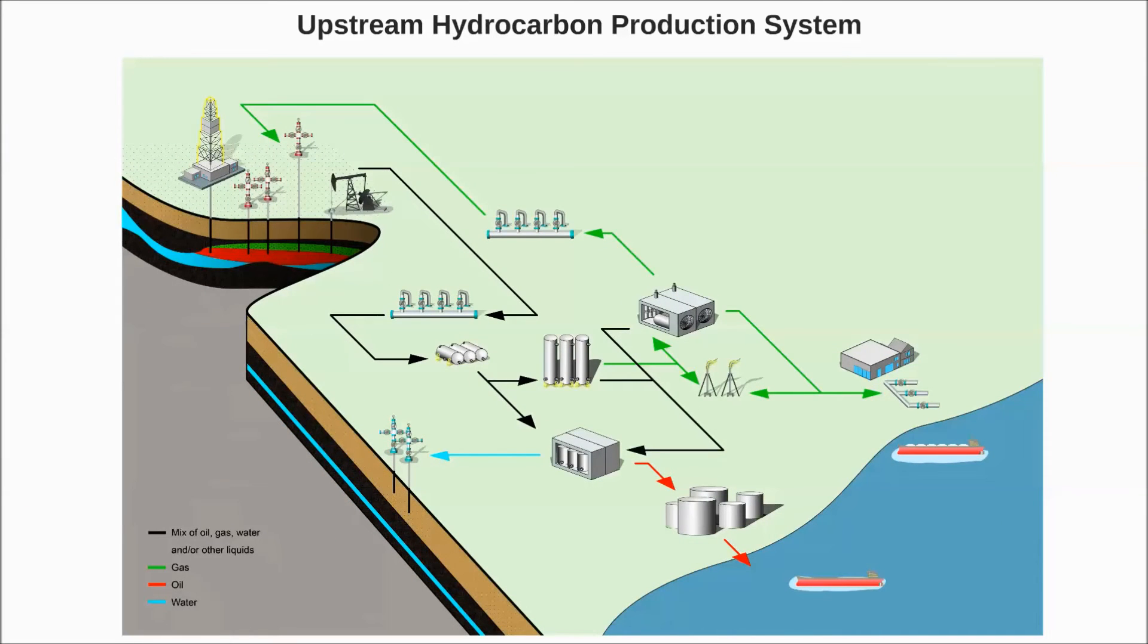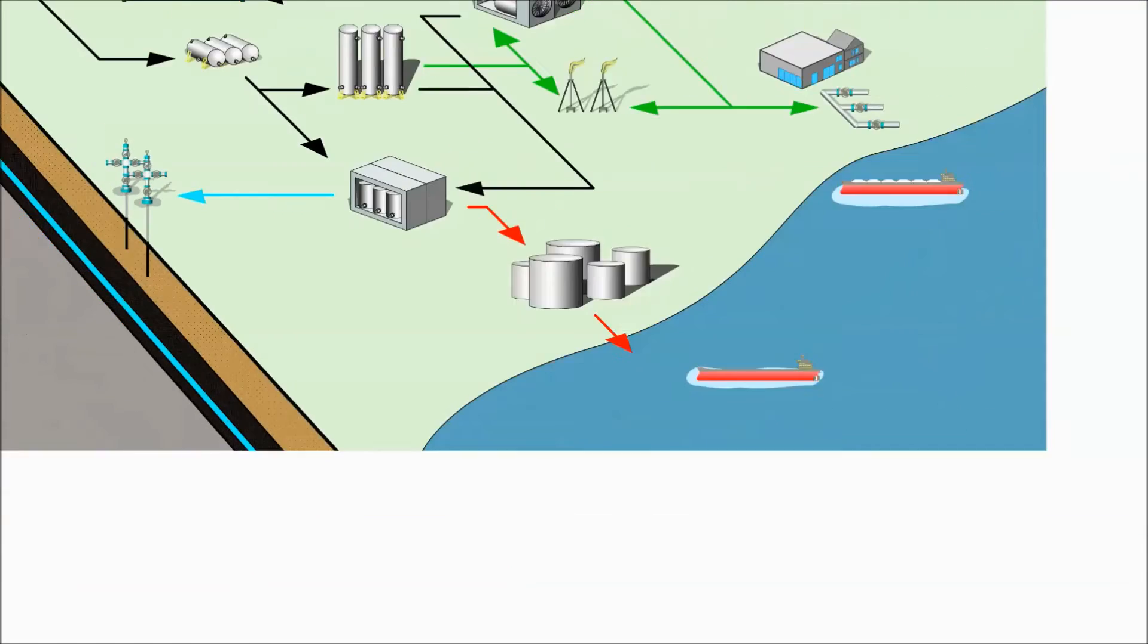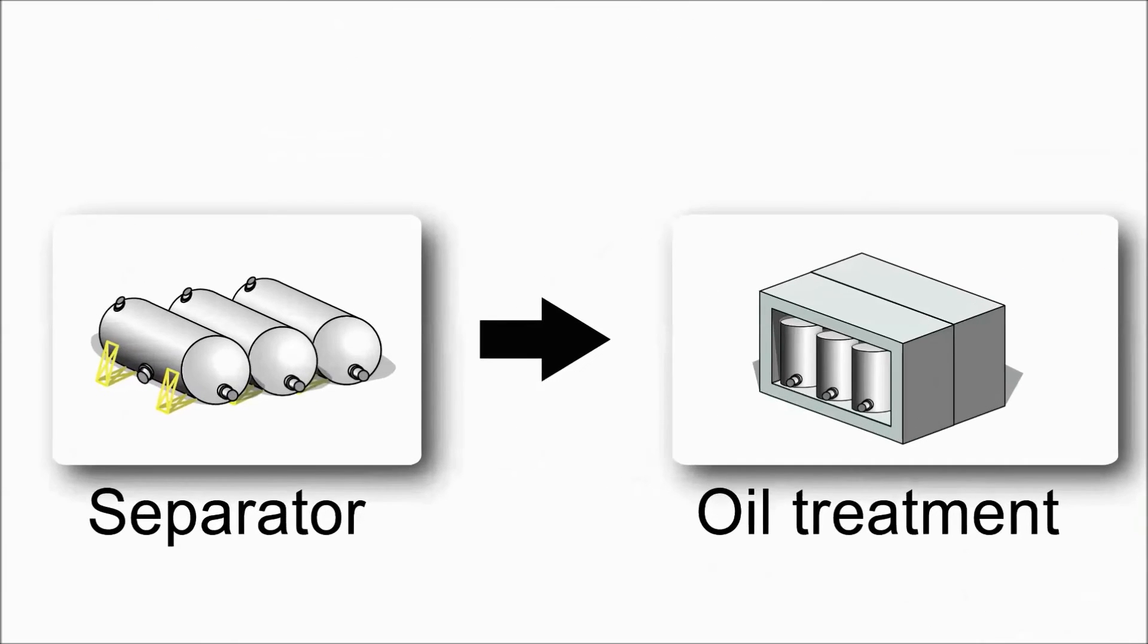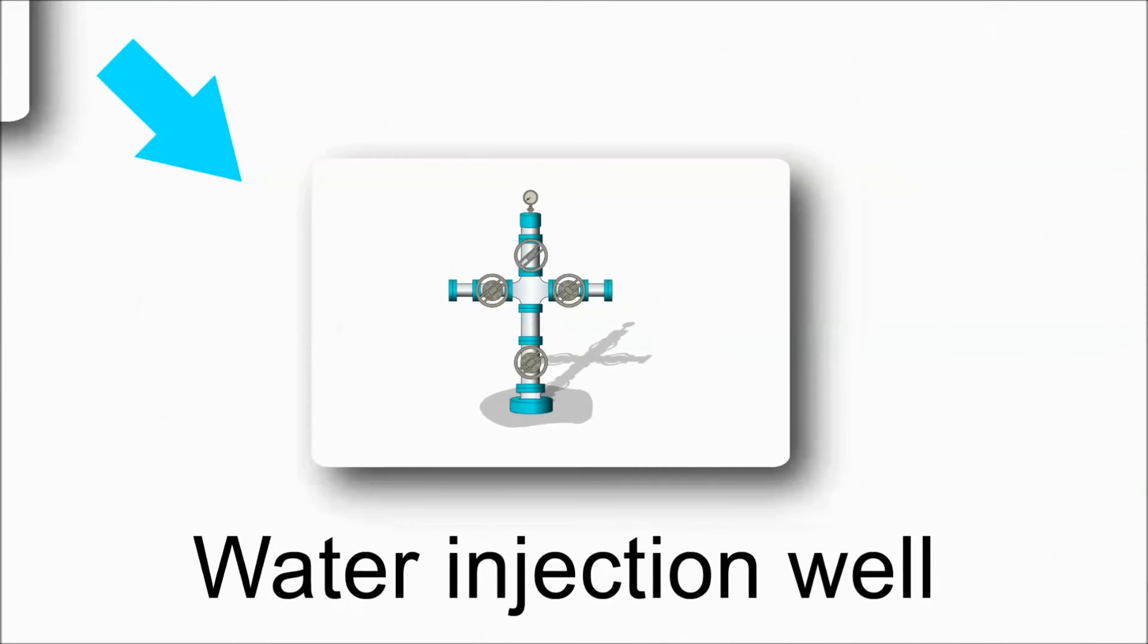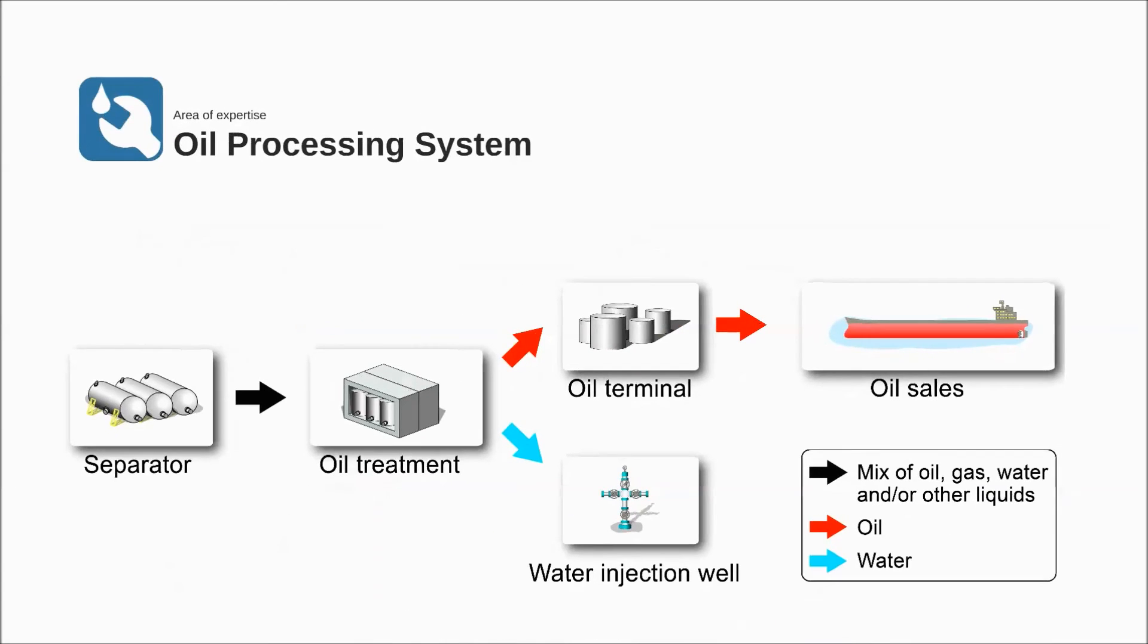The liquids follow a similar treatment process as the gas. Water will be removed, as will the impurities. From the separation, the oil undergoes further treatment to get the crude oil as clean as technically possible. Water is removed, purified and injected in special disposal wells. Finally, the oil is stored in a terminal for further distribution to refineries.